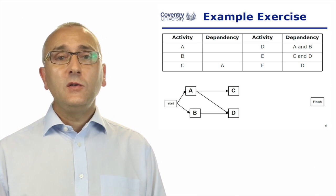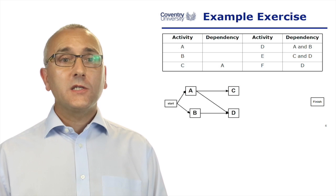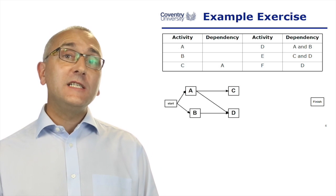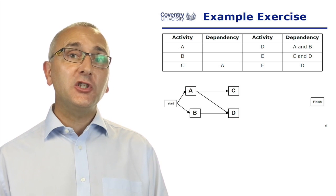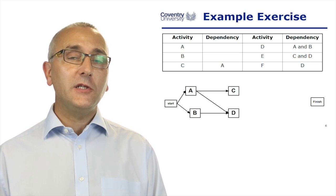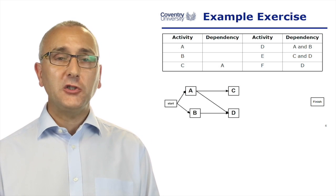Activity D depends on A and B. So we write D down. We've got a dependency from A from B. D cannot start until A is finished and B is finished. If one of them finishes, we can't start D. We've got to wait for them both to finish.